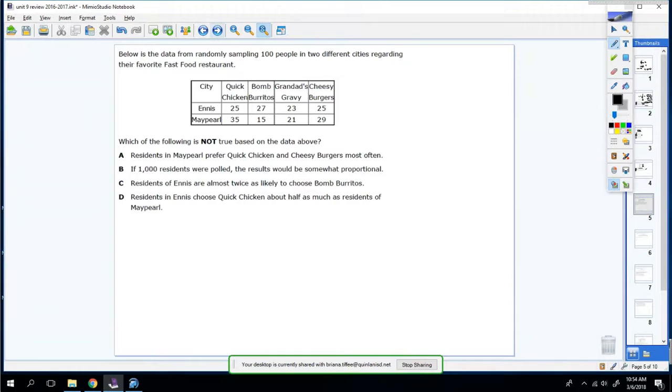Below is the data for randomly sampling 100 people in two different cities regarding their favorite fast food. Which of the following is not true? So residents in May Pearl prefer quick chicken and cheesy burgers most often. May Pearl, here's quick chicken and then cheesy burgers. That is true. They're the most highest. If a thousand residents were pulled, the results would be somewhat proportional. That's somewhat true.